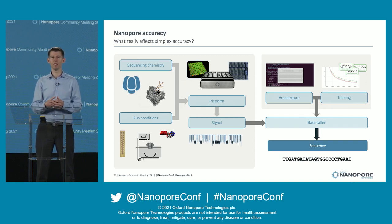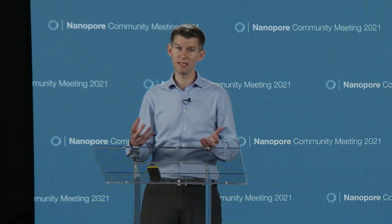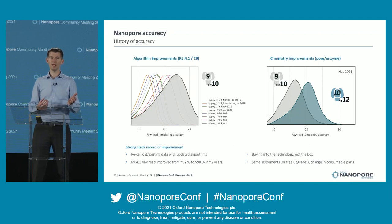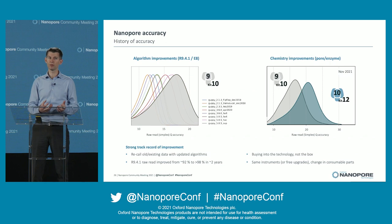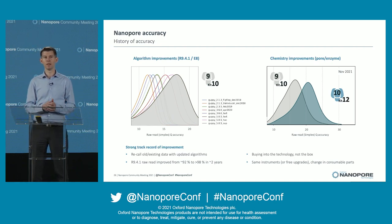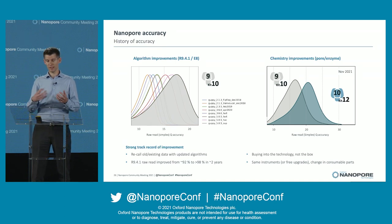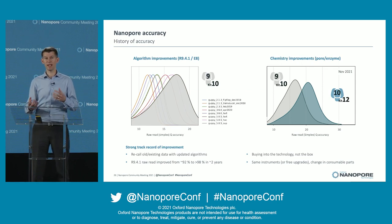Over the years we've made great strides in accuracy, and there are two different sorts of changes. On one side we have improvements from algorithms alone — software updates that can happen behind the scenes. You can go back and recall your old data. Over a timeframe of around two years, we actually improved from 92% to over 98% — that's a seamless upgrade, and you can recall your old data. But we also have step-change improvements, which are changes to the chemistry — things that actually change the signal. Recently we have our R10.4 Nanopore and Kit 12 chemistry, a change to both the pore and the motor.